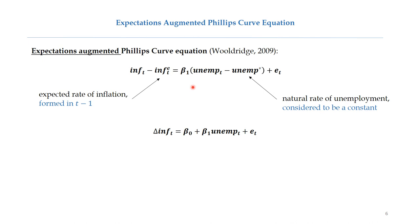Next is the expectations-augmented Philips Curve, which differs from the previous equation by the addition of two new variables: expected inflation and the natural rate of unemployment. It is assumed that expectations about inflation in the current period rely on the known inflation from the previous period. The natural rate of unemployment is considered a constant.